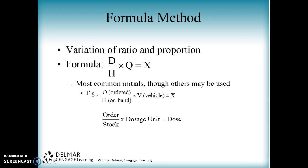They have a D, which is the desired or the dose prescribed. They have the H, which is what we have on hand. And then Q, which is referring to the quantity or the volume. And then X is what you're looking for. That's the way the book presents it, and that's the way you'll see it in most of the slides you're going to see today.